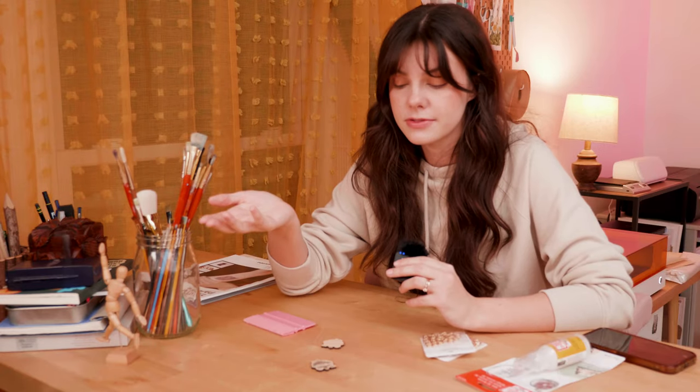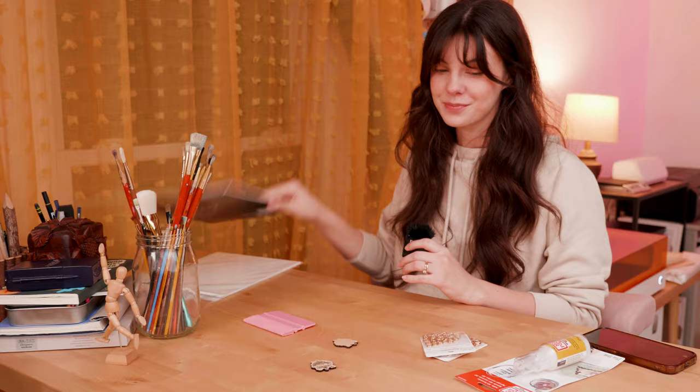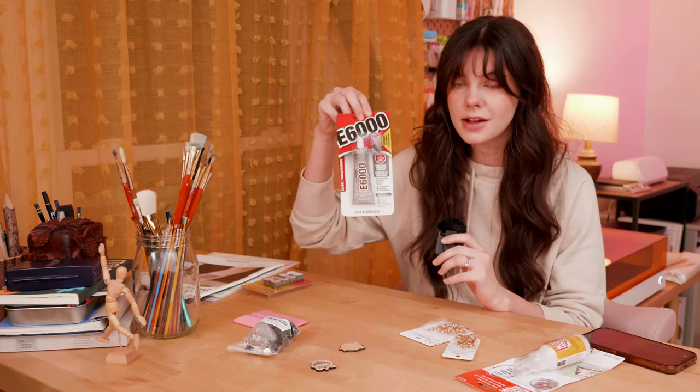The first one is using DTF transfers and you would just heat press the image onto the wood. And the second is using tattoo paper. And obviously, that's what we're going to try to use today. So I have some pin backs and I'm just going to attach them using industrial strength adhesive E6000.